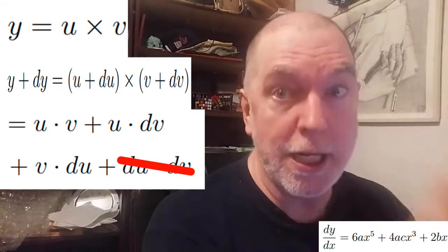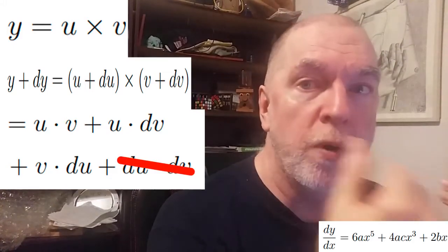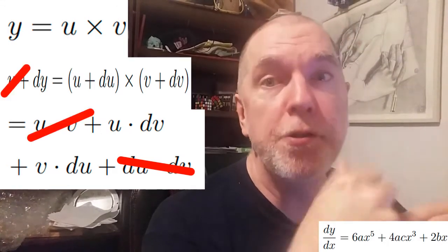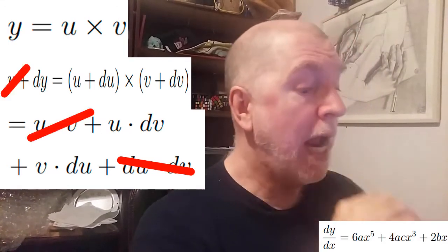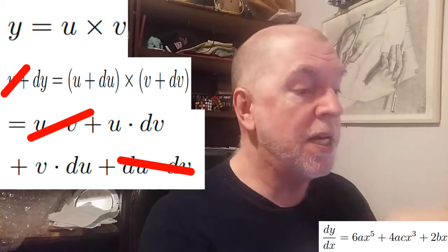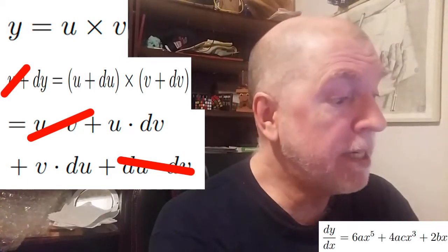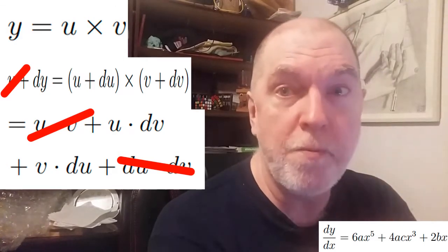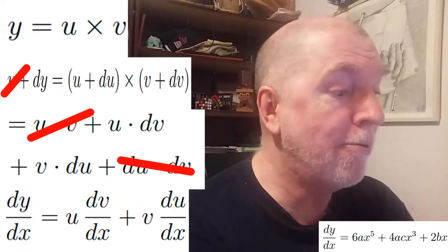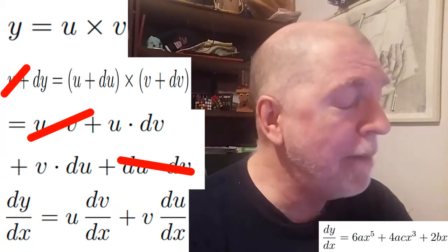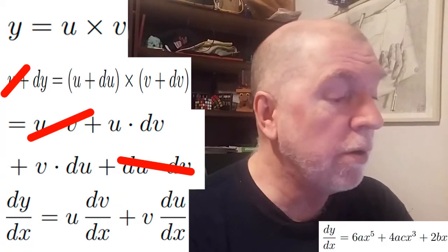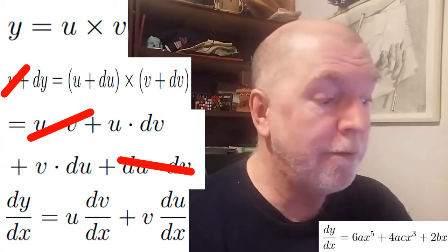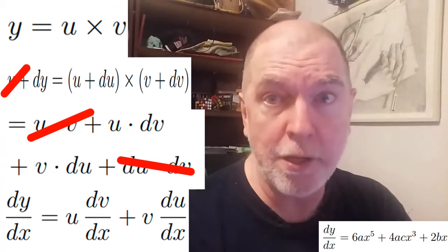And now, as before, remove the original function: y from the left, u times v from the right, and we end up with dy equals this product with the differentials in it. Divide through by dx, and now there we have it. dy by dx equals u times dv by dx, and plus v times du by dx.